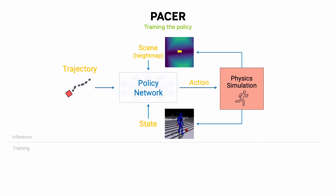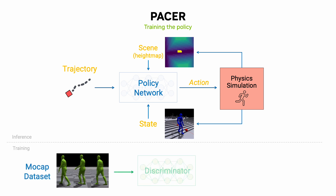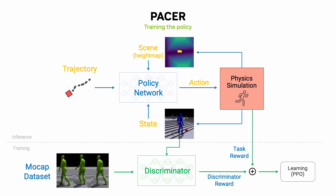Pacer is trained in simulation using reinforcement learning based on the Adversarial Motion Prior, or AMP, framework. Example character motions in the form of a mocap dataset are given to a discriminator, which judges how well motions from the policy reflect the motion characteristics from the mocap data. This gives a reward that encourages realistic movement. Meanwhile, the simulator calculates how closely the generated character motion follows the desired trajectory, which gives a task reward. Together, these provide the main learning signal to train the policy.